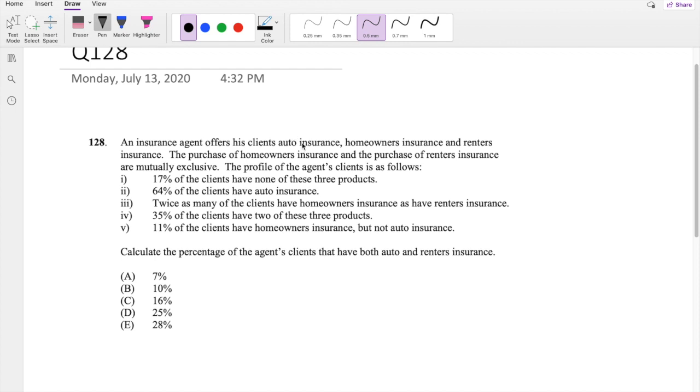Okay, so they have a choice of auto insurance, home insurance, and renter's insurance. And these are mutually exclusive. The purchase of homeowner's insurance and purchase of renter's insurance are mutually exclusive, meaning that they do not intersect. Next, this is renter's and this is homeowner's.